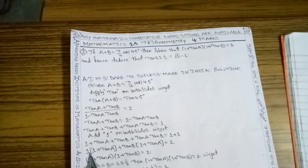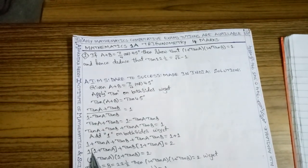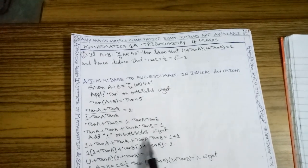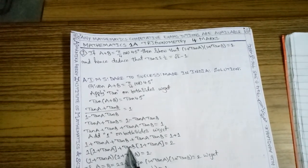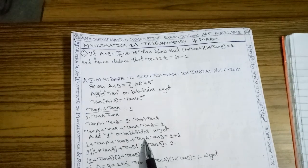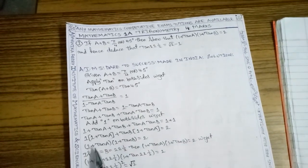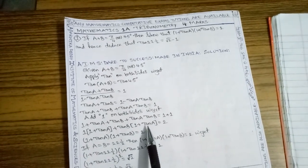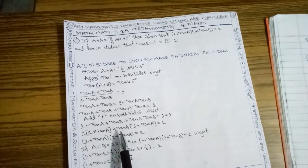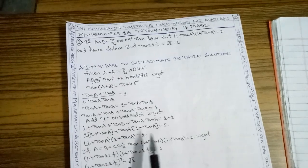From the first two terms, factor out 1 plus tan A. From the last two terms, factor out tan B, leaving 1 plus tan A. So from both brackets, 1 plus tan A is common. The remaining value is 1 plus tan B, which equals 2.